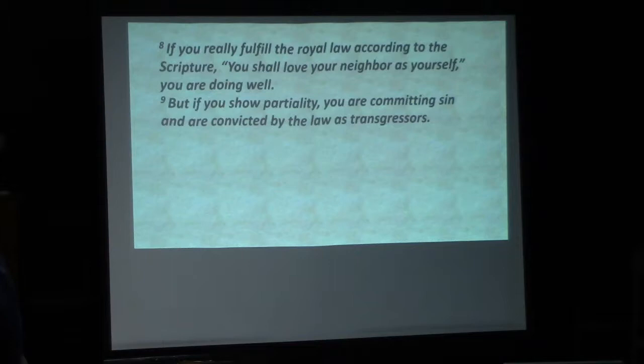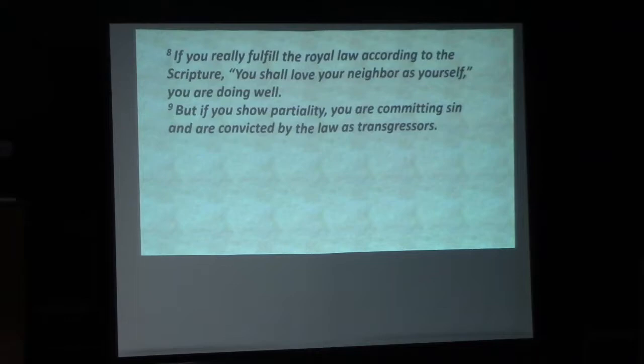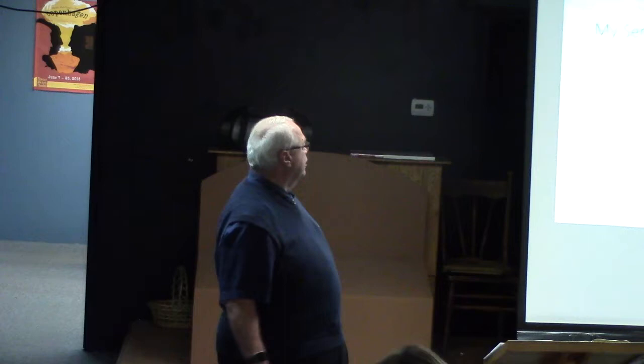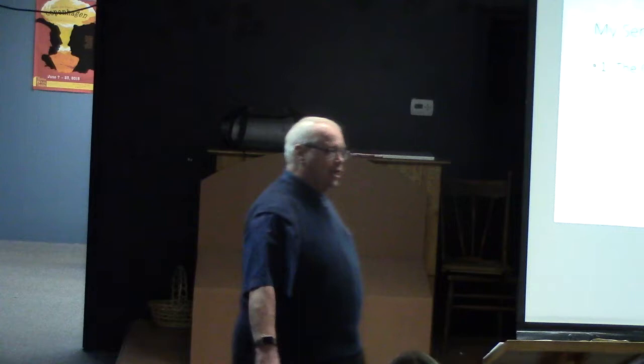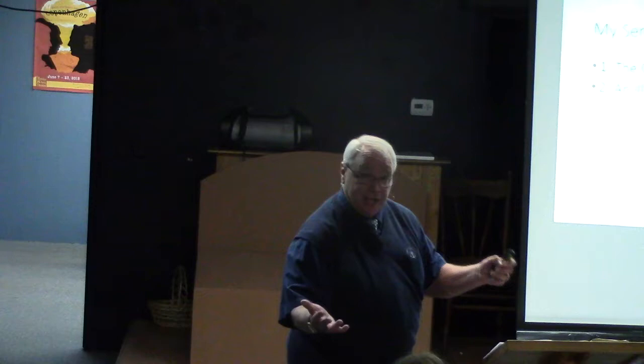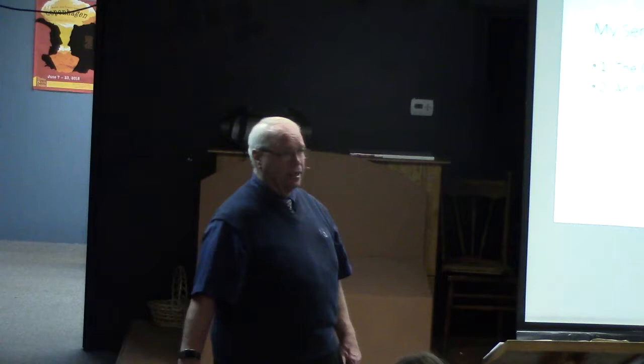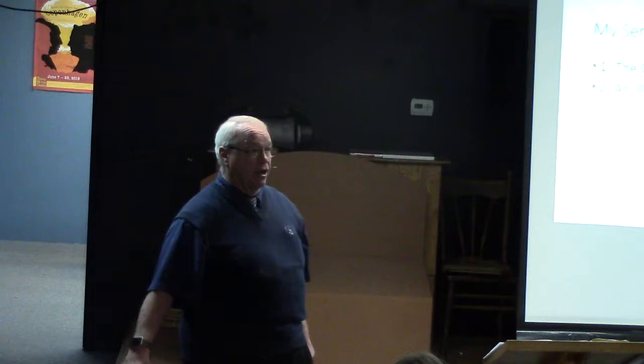So nine verses here talking about showing partiality. Here's my outline this morning. First of all, I'm going to talk about verse one, he gives the command. Secondly, he gives them an illustration. This illustration probably actually happened, probably happened a lot of times in the churches. James is talking to believers and he saw some problems in their Christian life. All through chapter one, he saw another problem: showing partiality.